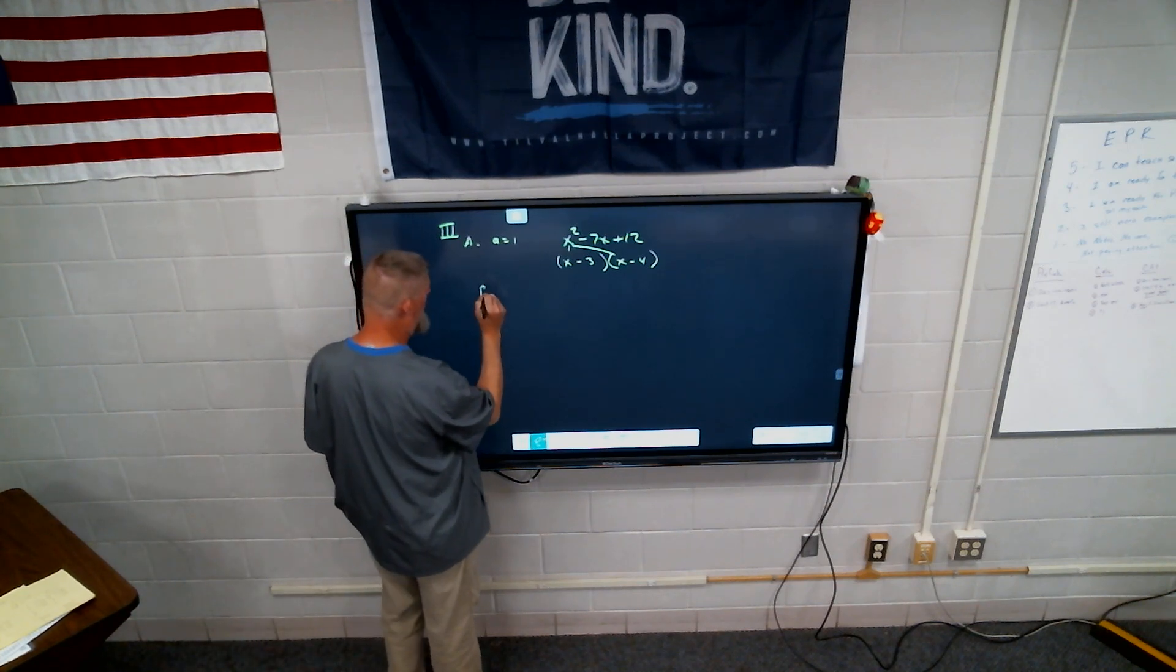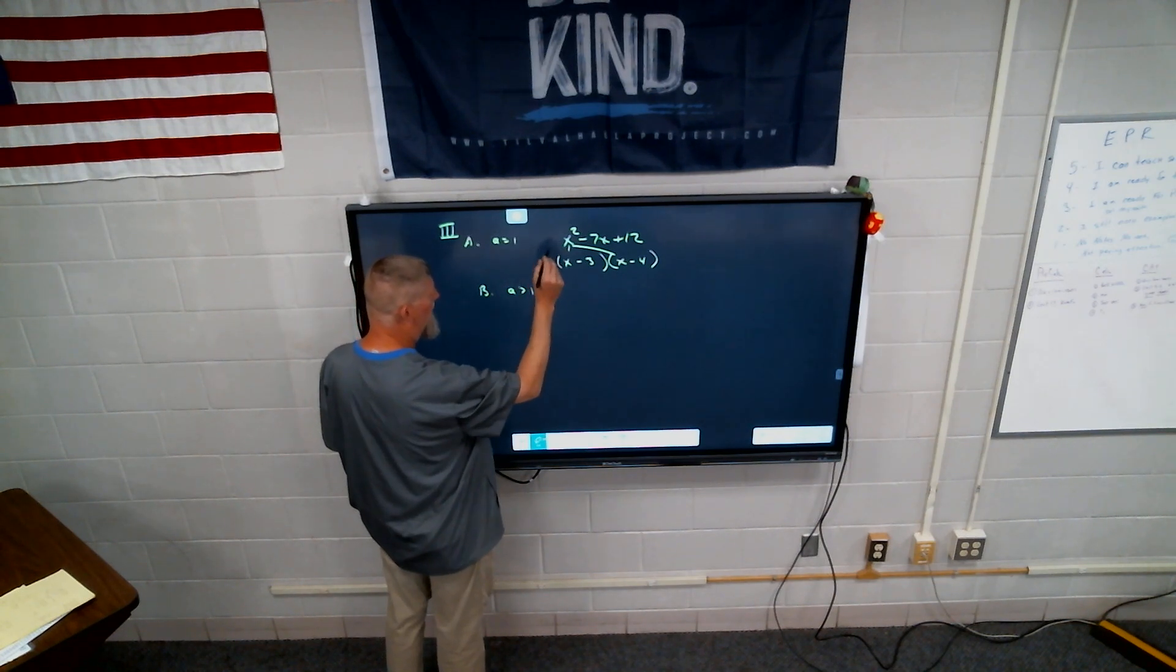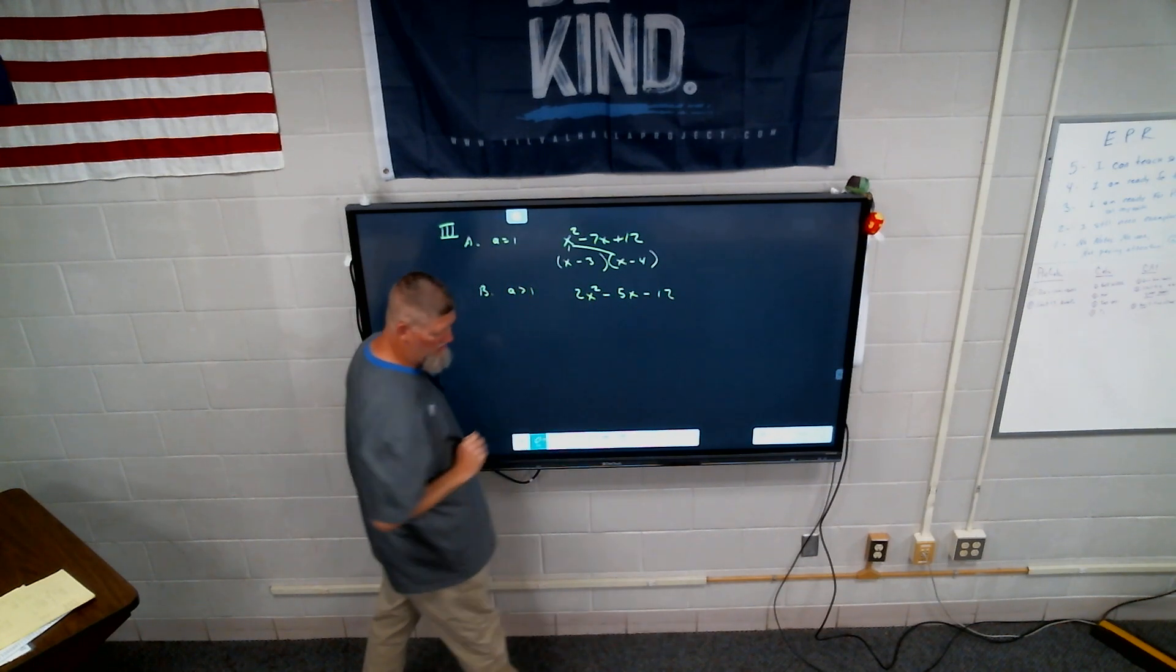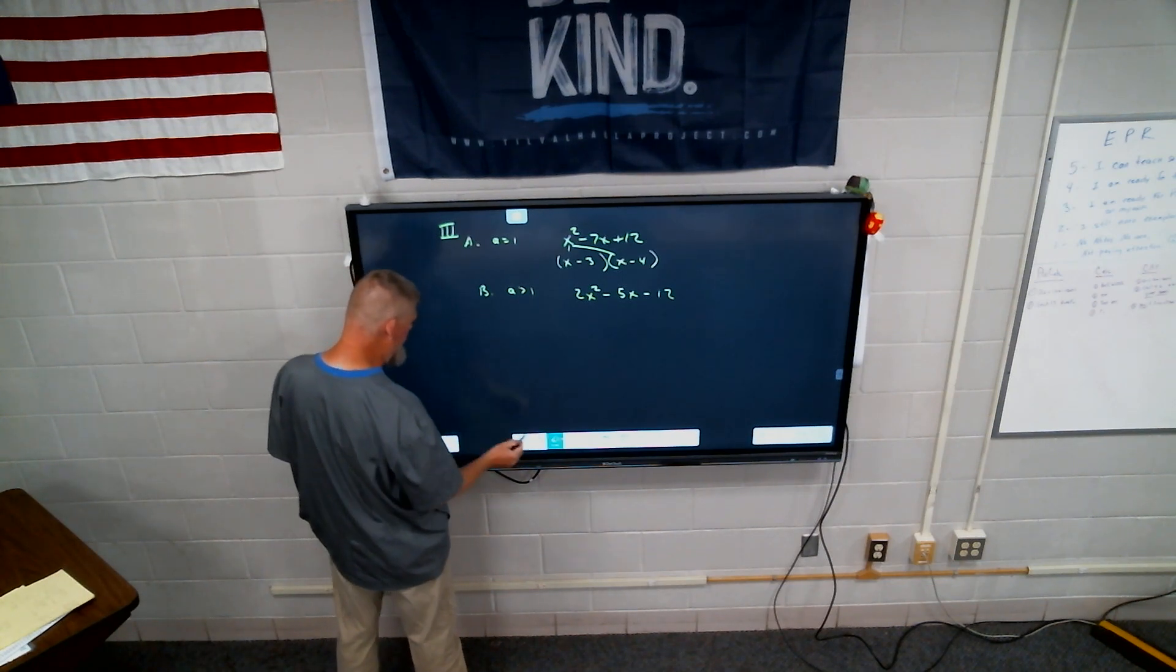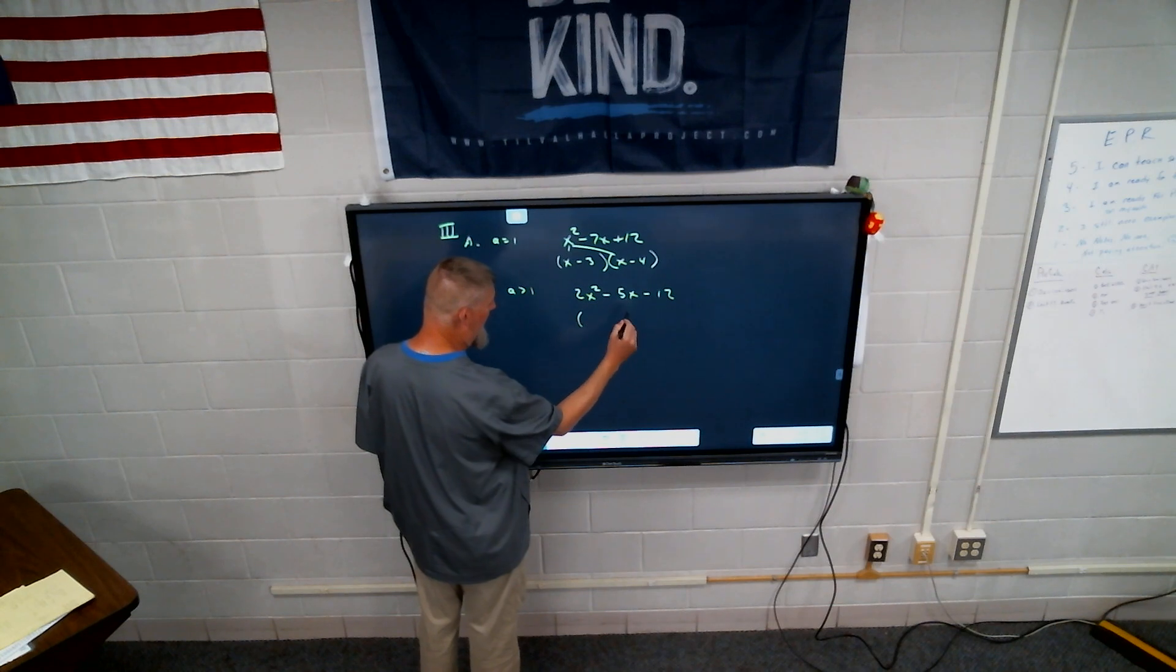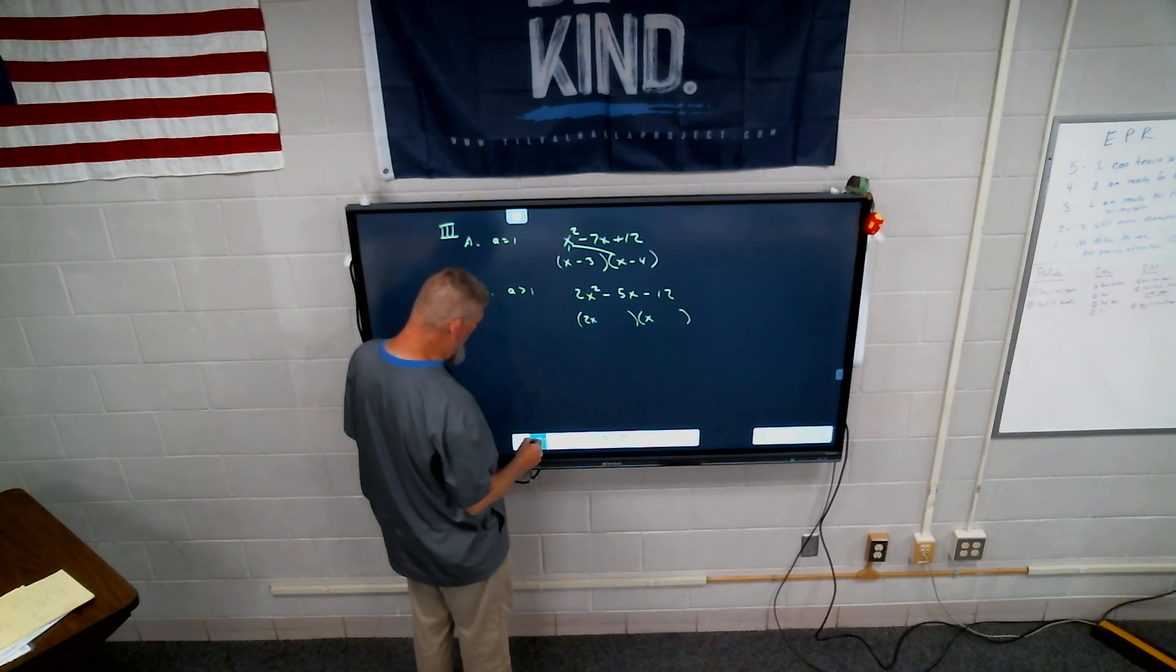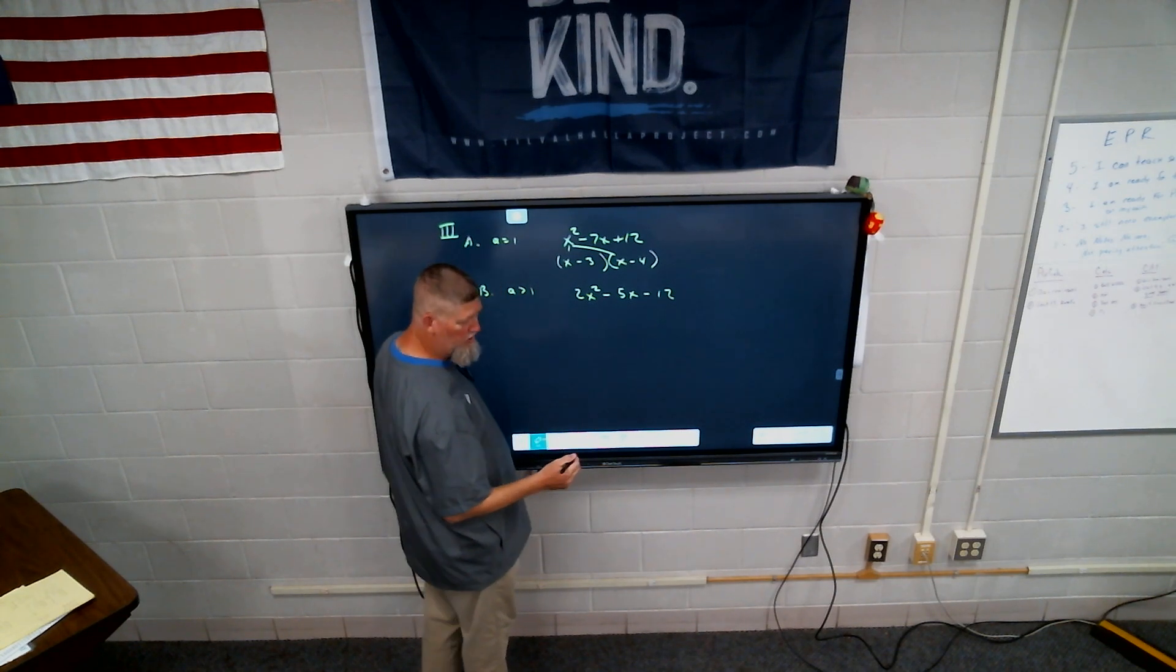Now, what if though, today we're going to talk about, what if a is greater than one? When I put a number in front of that x squared, it kind of messes up my whole thing. So let's say we give you something like two x squared minus five x and I think it's minus twelve. So now we have this issue where I have a two in front. So now it's not going to be x and x. It has to multiply to equal two x squared. So it's going to be like two x and x. That's going to mess up everything else. So do you remember the process we used? I don't really care for it, but we're going to teach it this year because it seems to work. Do you remember the concept of bottoms up?